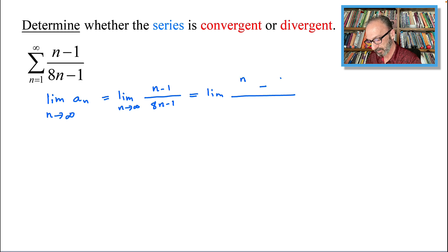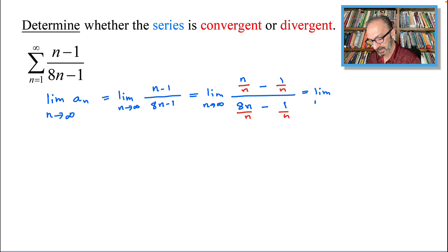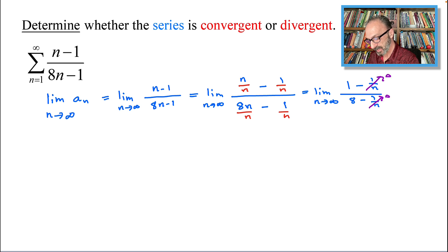But to do it in steps: we have n minus 1 over 8n minus 1, and we divide everything by n on top and bottom as n approaches infinity. This equals the limit as n approaches infinity of 1 minus 1 over n, divided by 8 minus 1 over n. As n approaches infinity, the 1/n terms go to 0, so the limit is equal to 1 over 8.